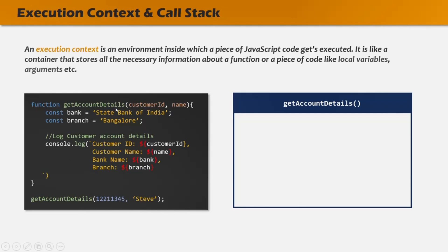When this function is called, in order to execute it, an execution context will be created. An execution context is like a container which stores all the information about a function, and it gets created whenever a function is called. On a broader term, we can say that an execution context is a piece of memory. This piece of memory stores all the information about the given function, like the value of its parameters, the value of its local variables, a reference to its inner functions, etc.